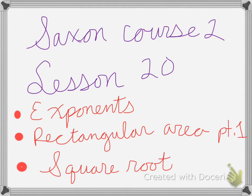Alright, so Saxon Course 2, Lesson 20 is on exponents, rectangular area, part 1, and square root.